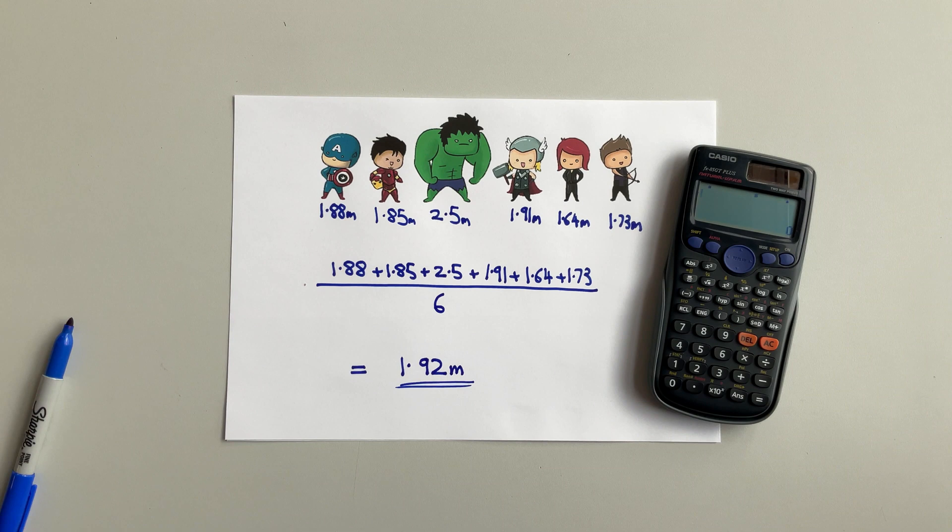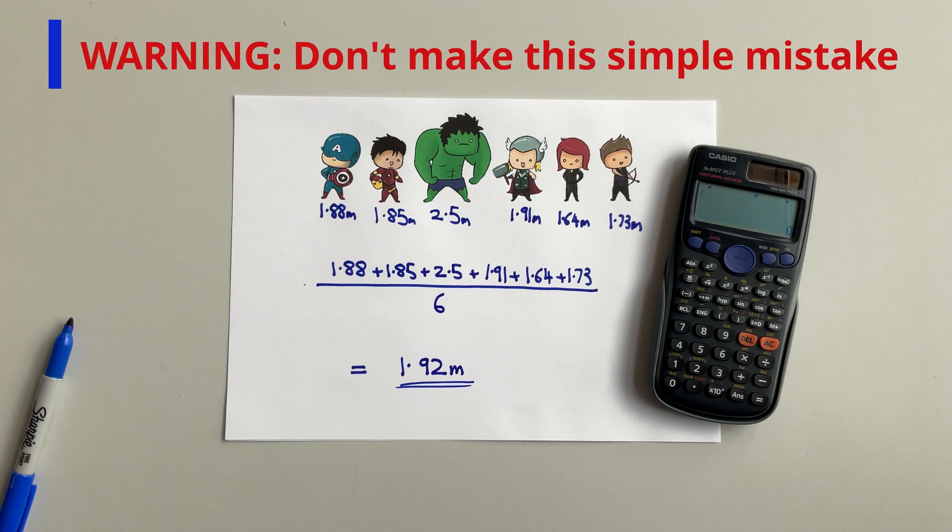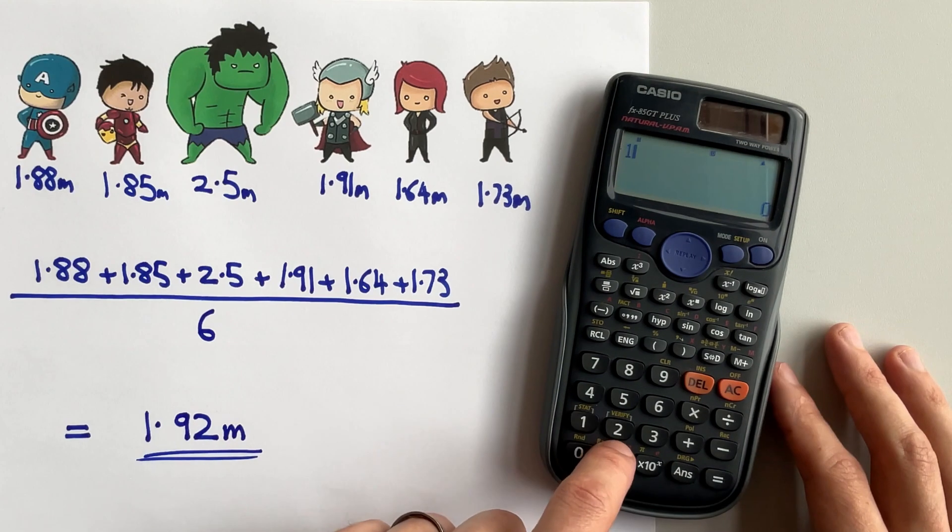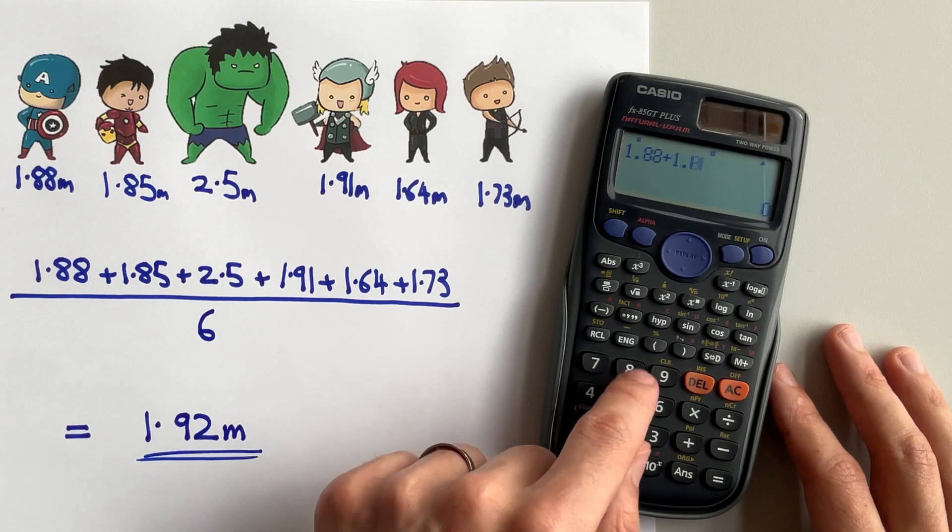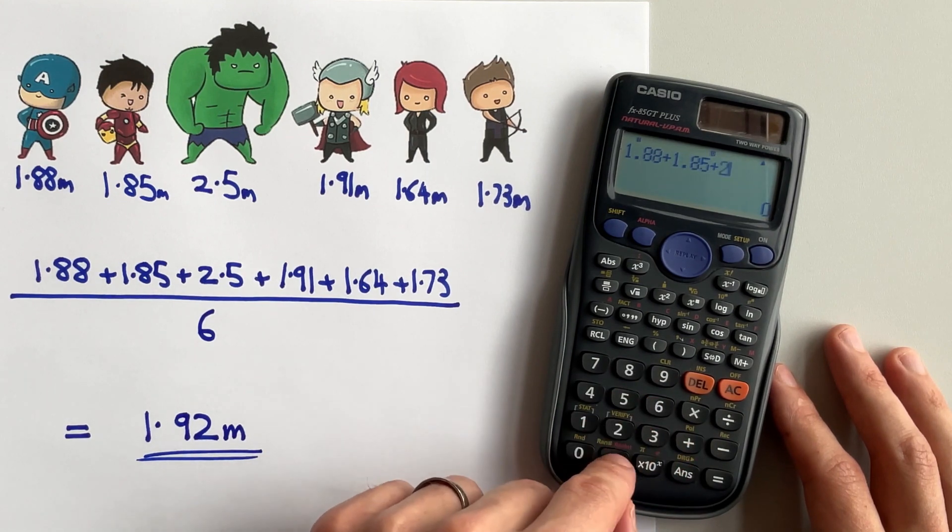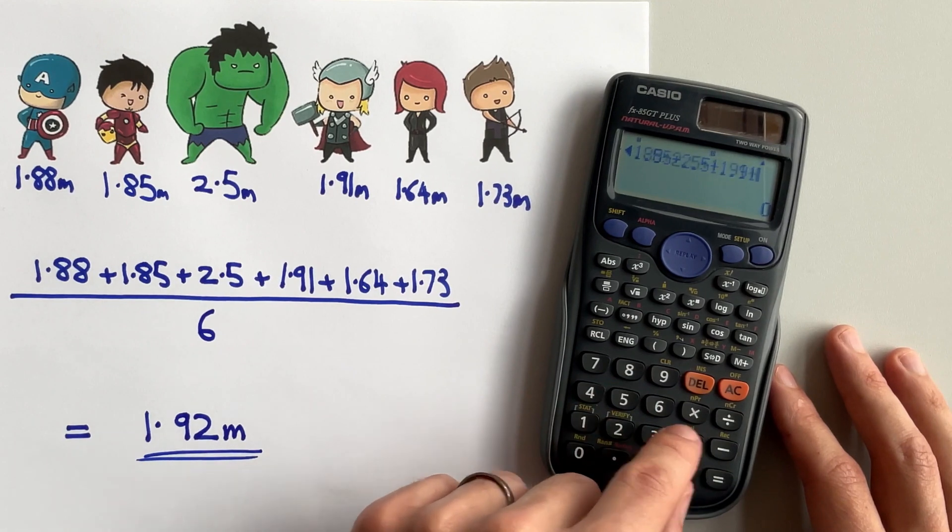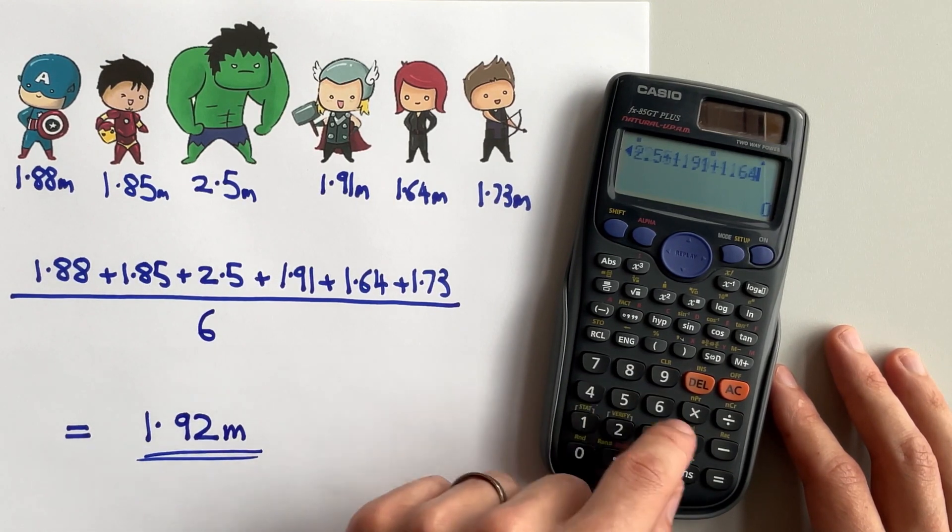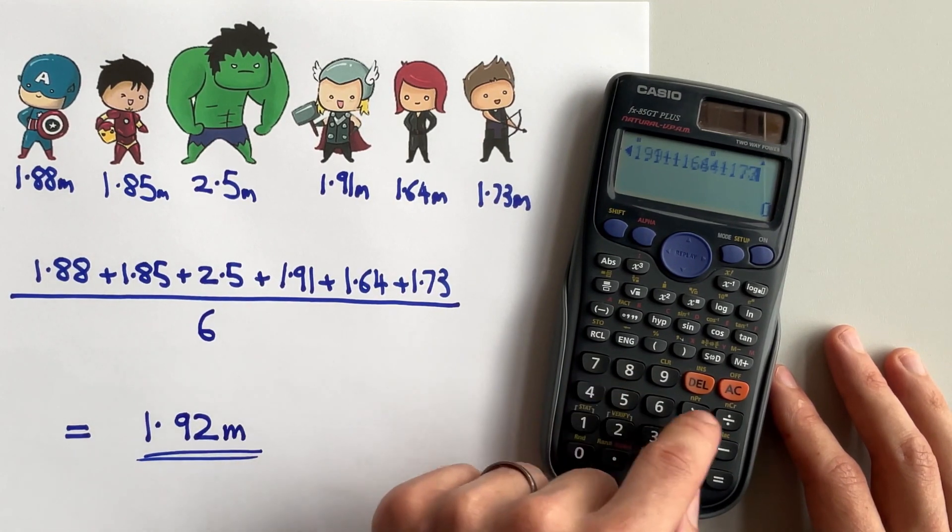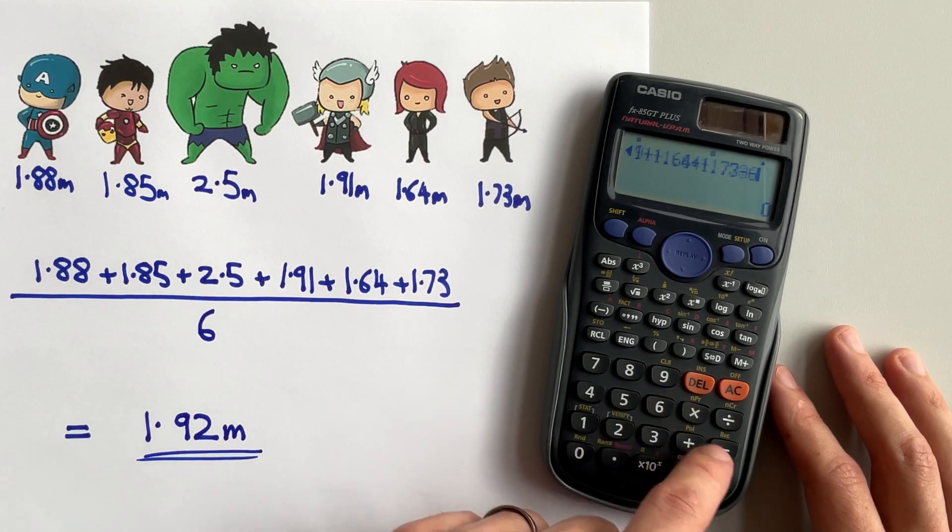Before we move on, I want to point out a really common mistake. Did you notice how before I pushed divide by six, I pushed the equals button? That's because of how calculators work. If I'd forgotten to push equals, what the calculator would have done is add together the height of the first five Avengers and then add on a sixth of the height of the last one, giving me a mean height of 10 meters.